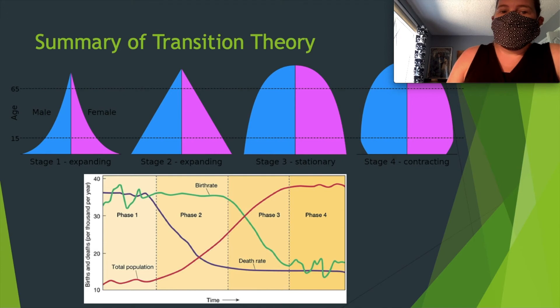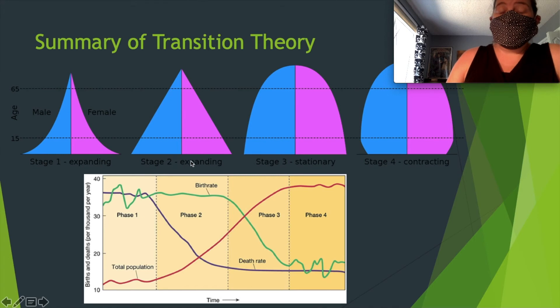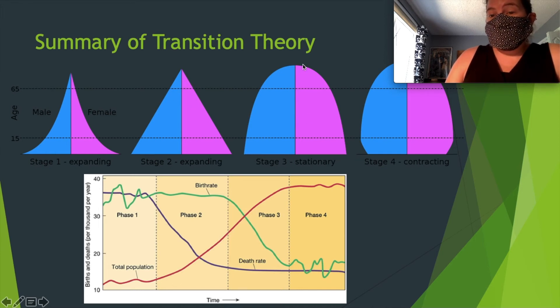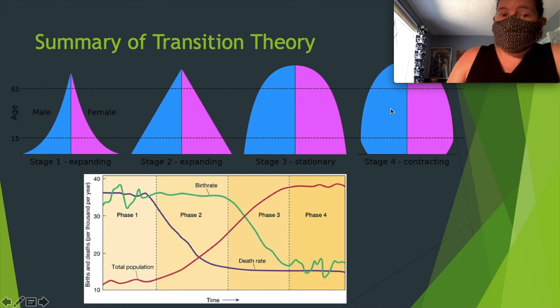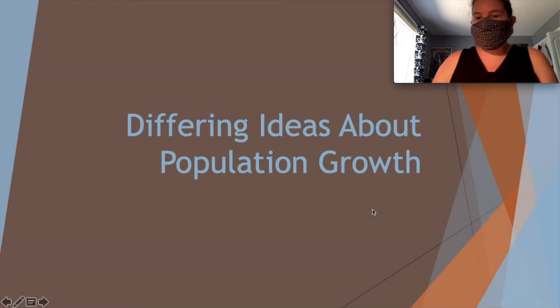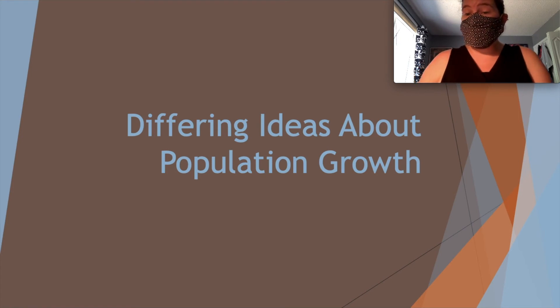Here's a summary of the transition theory. Stage one is expanding with high birth rates but fluctuating birth and death rates. Stage two is expanding because we've found some form of death rate control. Stage three shows a declining birth rate. Stage four is contracting — less birth, less death, becoming more stable. That is the demographic stages in a nutshell. We're now going to talk about population theories — different ideas about population growth.